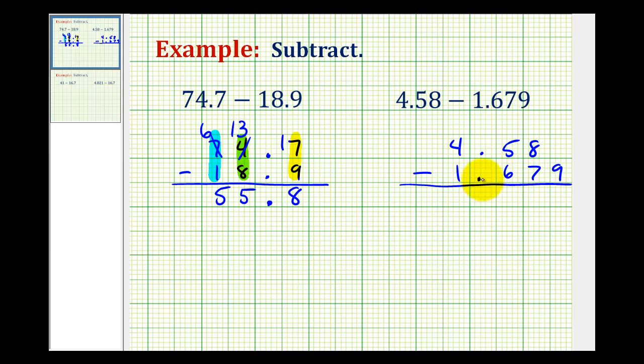Notice how this decimal has three digits to the right of the decimal, and this one only has two. In order to have the decimals have the same number of digits to the right of the decimal, we can add a zero here in the thousandths place value without changing the value of this decimal, which will make the subtraction easier to perform.